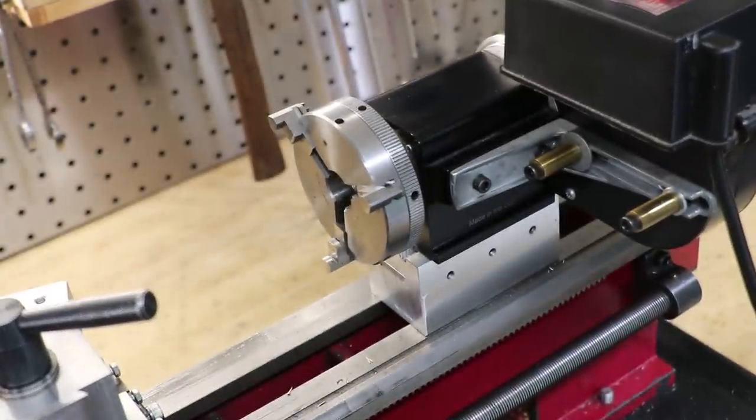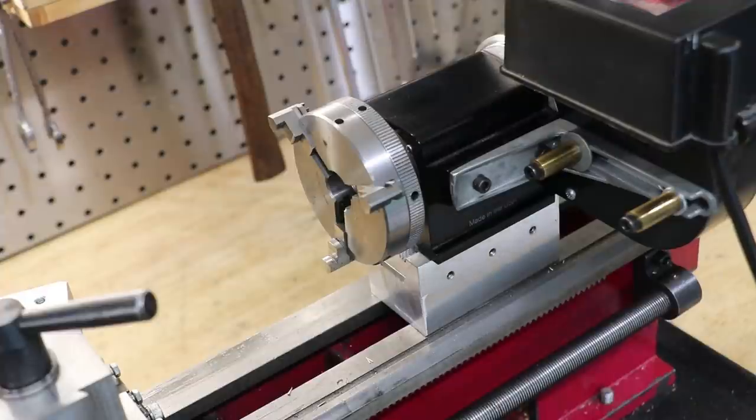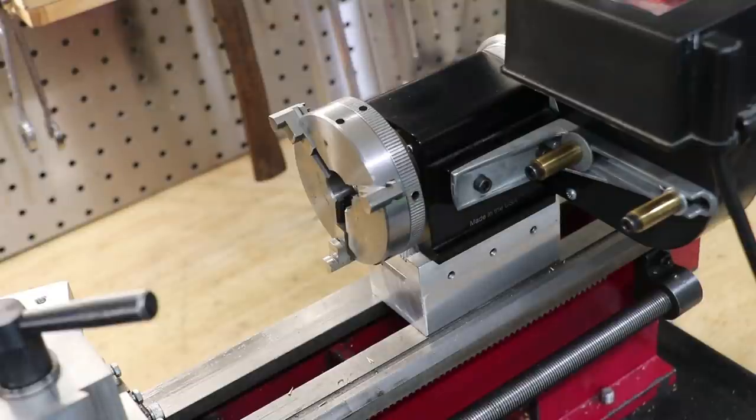What I've done is I've mounted the Sherline spindle to the lathe using a mount which I made a while back. The Sherline uses a variable speed motor to drive the spindle, so I can get the RPM really low.